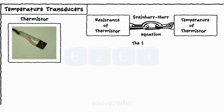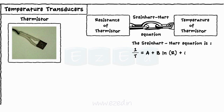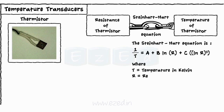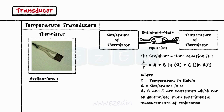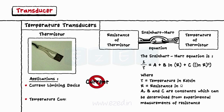The Steinhart-Hart equation is: 1 upon T equals A plus B times ln(R), plus C times ln(R)^3, where T equals temperature in Kelvin, R equals resistance in Ohms, and A, B and C are constants which can be determined from experimental measurements of resistance. Common applications of thermistors include use as a current limiting device, and for temperature control in toasters, coffee makers, etc.